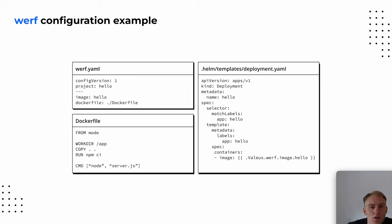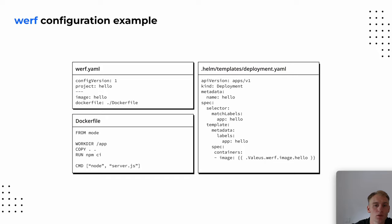A few words about project configuration with Werf. Werf uses YAML configuration to describe how your application should be built and deployed. A typical project configuration includes several files: werf.yaml, one or several Dockerfiles, and a Helm chart — by default in the .helm directory. This configuration is enough to demonstrate Werf in action, and we will come back to it later.